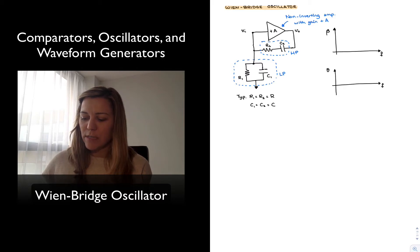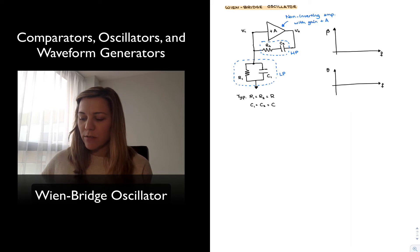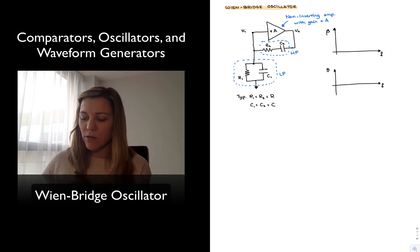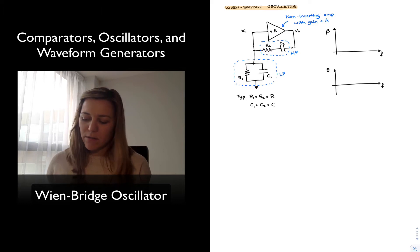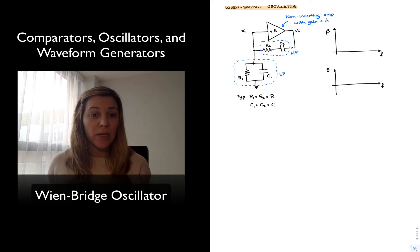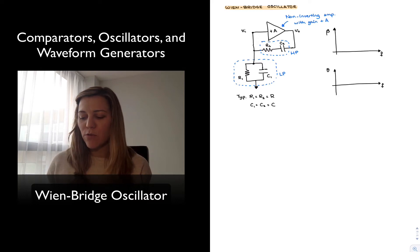Taking it from the output, you can see a feedback network comprising a series configuration of a resistor and a capacitor, labeled R2 and C2, and the parallel configuration of a resistor and a capacitor, labeled R1 and C1. Typically, in a Weinbridge Oscillator, R1 and R2 will be equal to each other, and C1 and C2 will be equal to each other, and therefore those might just be labeled simply R and C.